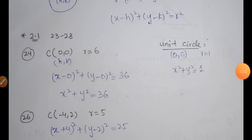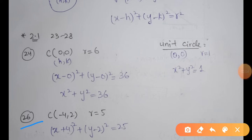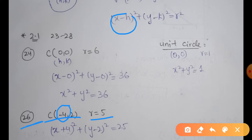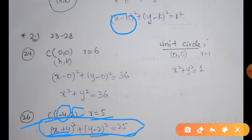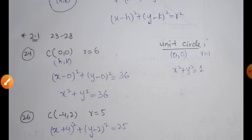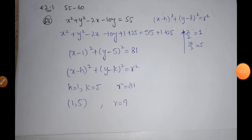In question number 26, we have the center point at (minus 4, 2) and radius equal to 5. Here H equals minus 4, so X minus (minus 4) becomes X plus 4 whole square. K equals 2, so Y minus 2 whole square equals R squared, which is 25. You do not need to expand the squares — it is just the standard form. So (X plus 4) whole square plus (Y minus 2) whole square equals 25 is the equation of the required circle.